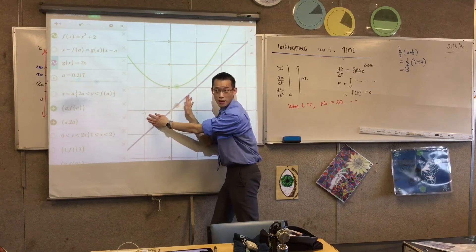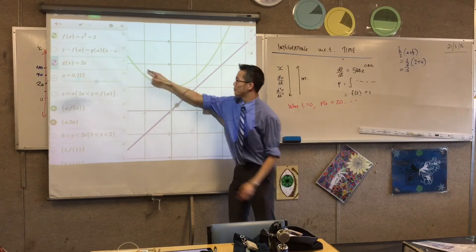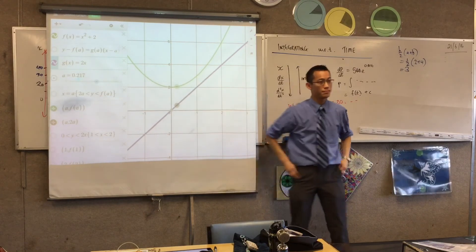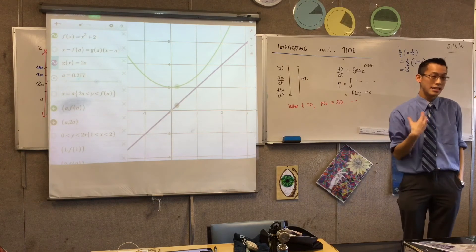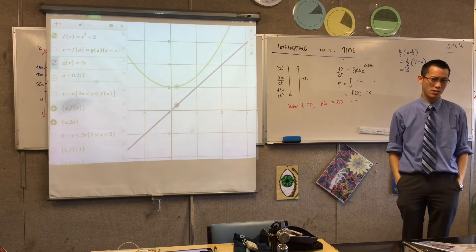This area here, this area here, they cancel out, which is why total displacement is zero, because the integral, not the area, the integral is zero, so that's why there's no displacement. Does that make sense?